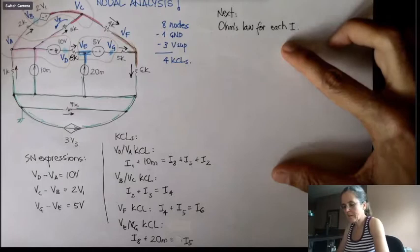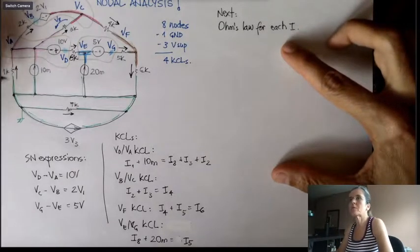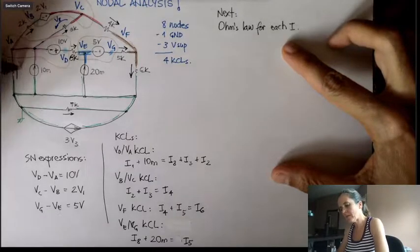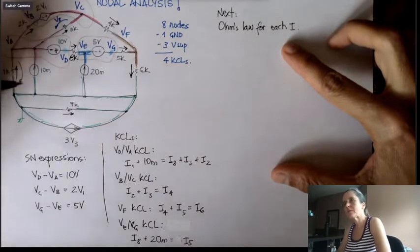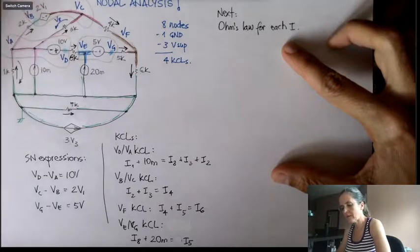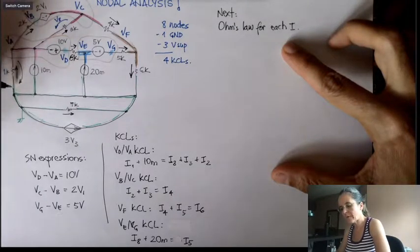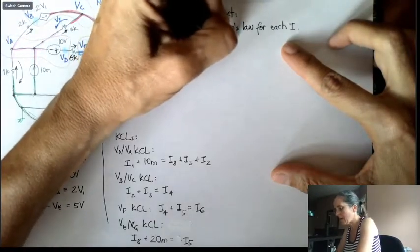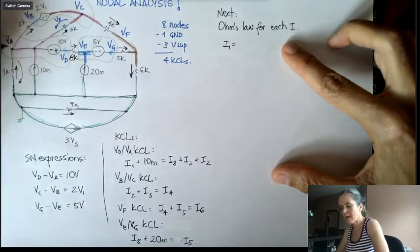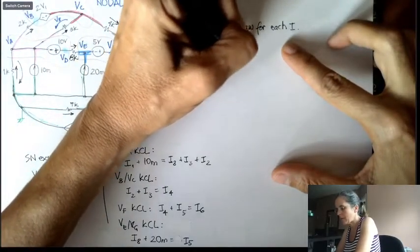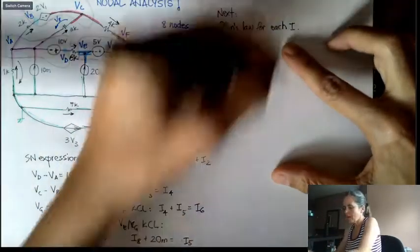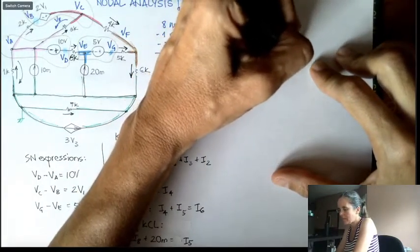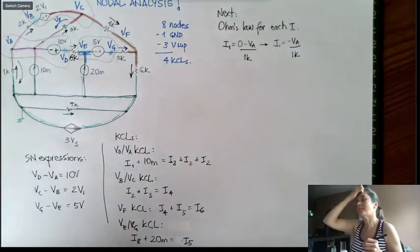And that's tricky because, for example, on this 1k here, the current's going up. That means the voltage drop is in this direction here, which means we do arrow minus tail. So the voltage at this arrow here is zero. So Ohm's law for I1 will be zero minus VA divided by 1k. And therefore, I1 is minus VA divided by 1k. And that negative sign is critical there. That is what I'm measuring.